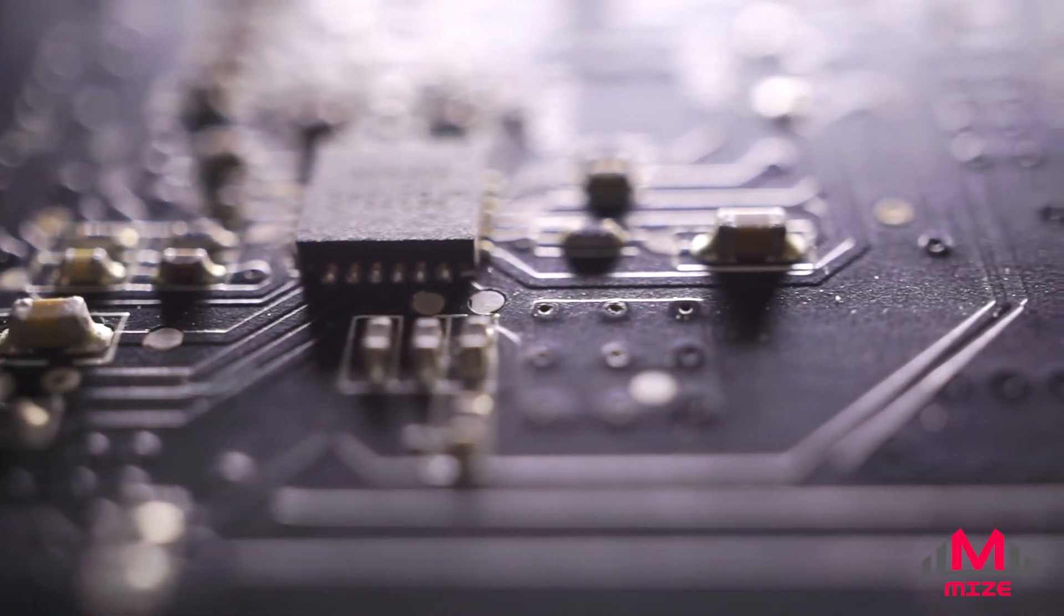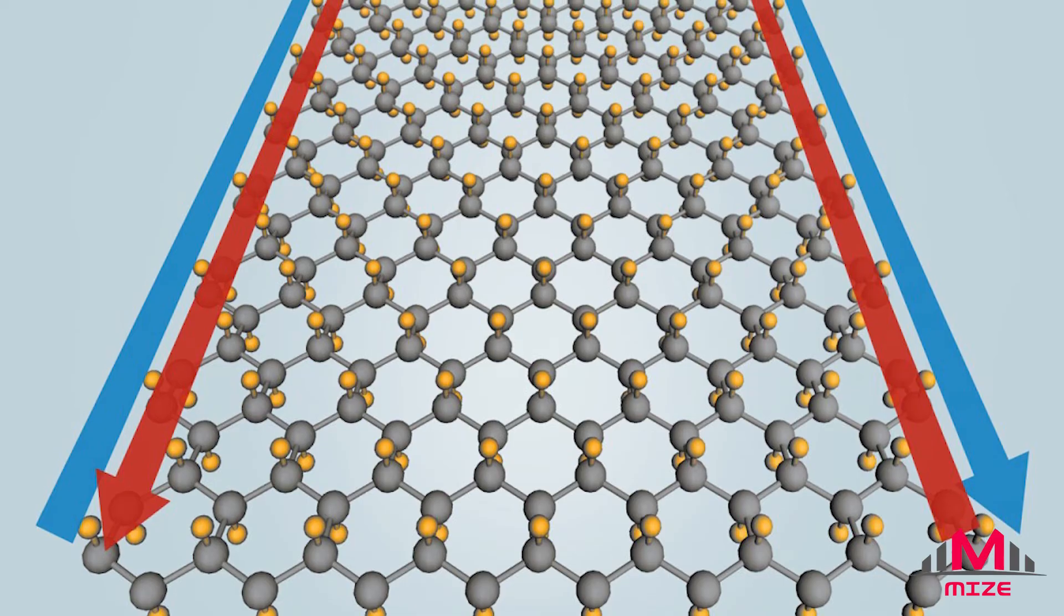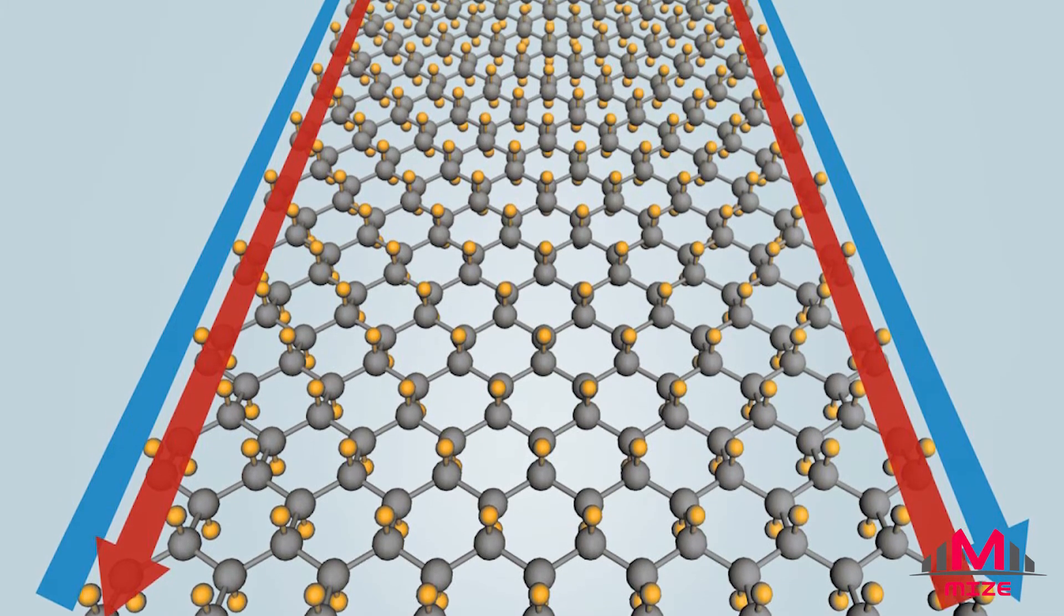Stannine is part of a group of topological insulators that conduct electricity only on their outer edges. Being only an atom thick, the electrons can travel through the material with no resistance, which improves efficiency. However, stannine is the first of these topological insulators to work at room temperature.